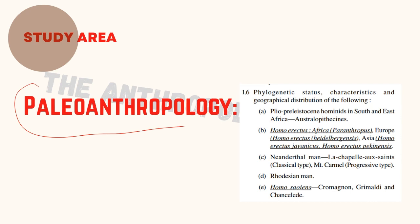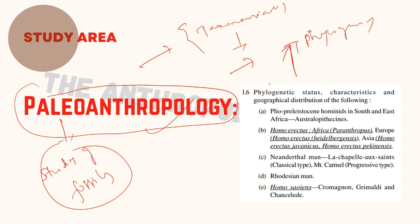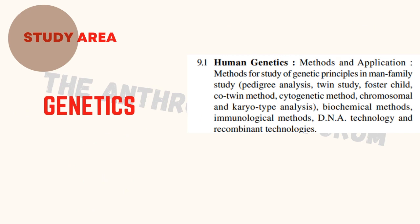Another focus area is paleoanthropology. 'Paleo' refers to the study of fossils. We have seen how humans evolved and how they are classified taxonomically — this classification is based on the findings of fossils. Paleoanthropologists study fossils, correlate their age using various dating methods, and try to fix the position of the organism in the phylogeny.